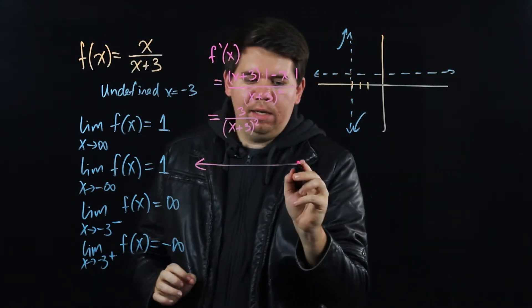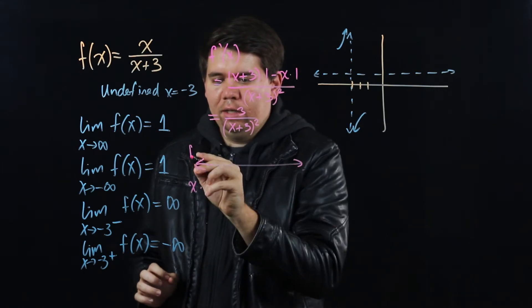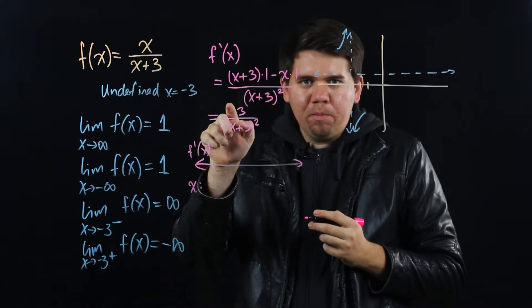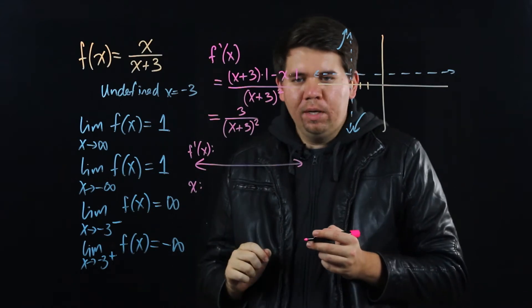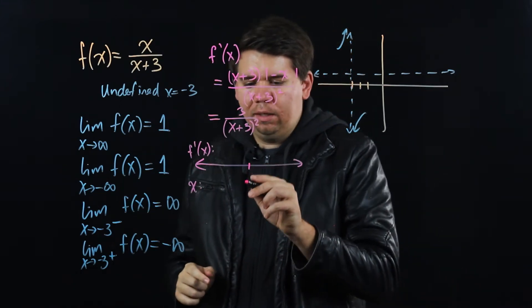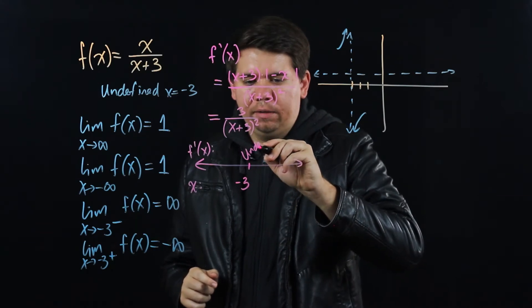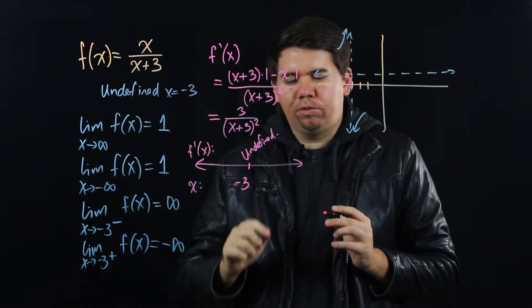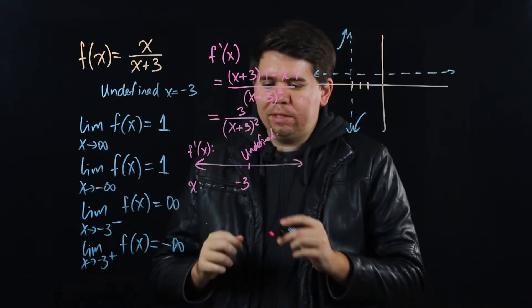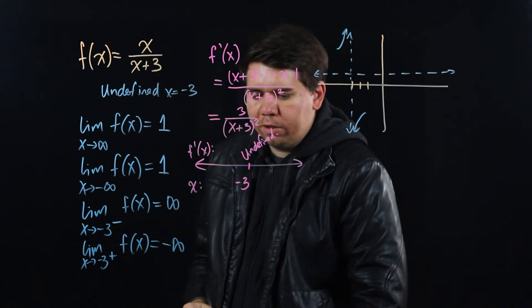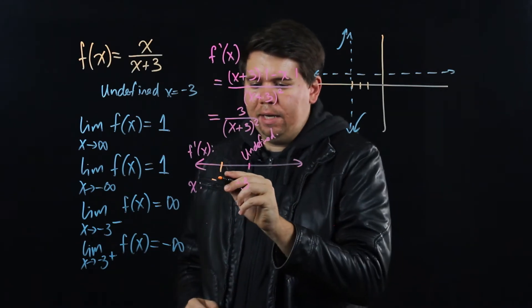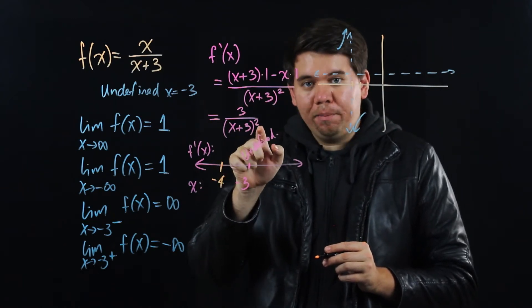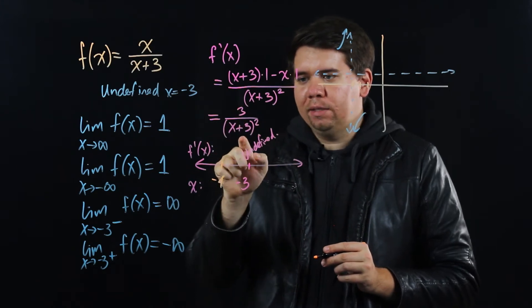We make a number line noting critical values — where the derivative is 0 or undefined. This fraction is never 0 since the numerator is 3. It is undefined at x = -3. Plugging in a test value smaller than -3, like -4: minus 4 plus 3 is minus 1, squared gives positive 1, and 3 divided by 1 is a positive number.